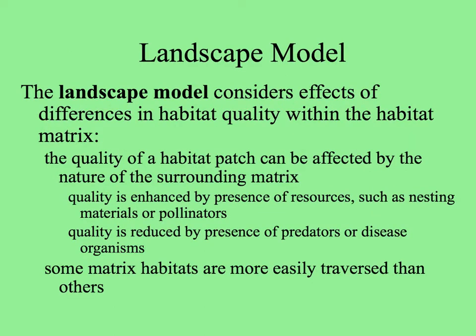The landscape model considers the effects not only of habitat quality in the matrix, but other landscape features: elevation, barriers, water to terrestrial species, and so on. The quality of the matrix is enhanced by resources necessary for the species to move across it, like nectar and pollen for flower visitors, or nesting materials. The quality of the matrix is reduced by the presence of enemies of the species. Some matrix habitats are better than others.